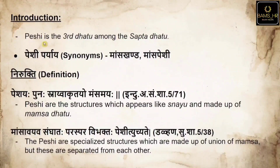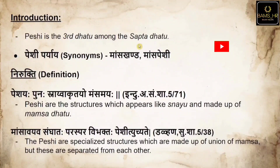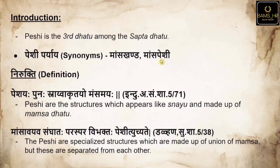Peshi is nothing but the Maamsa Dhatu, which is the third Dhatu of Sapta Dhatu. The Sapta Dhatu are: Rasa, Rakta, Maamsa, Medha, Asti, Maja, and Shukra. So Peshi is the Maamsa Dhatu, the third Dhatu among the Sapta Dhatu. The synonyms (paryaya) of Peshi are Maamsa Khanda and Maamsa Peshi.